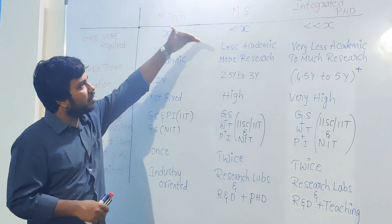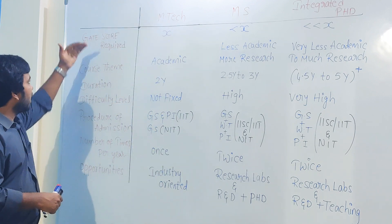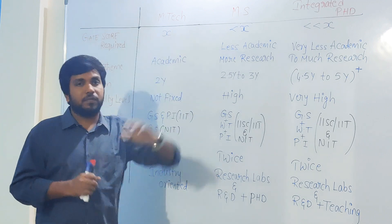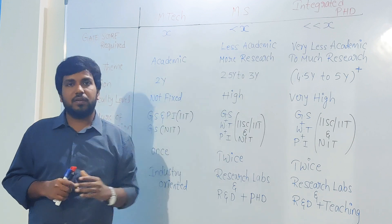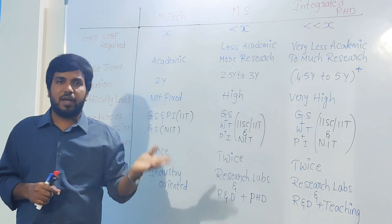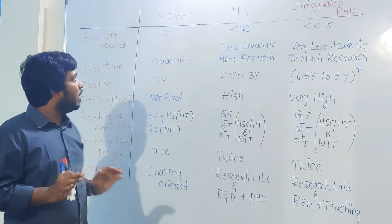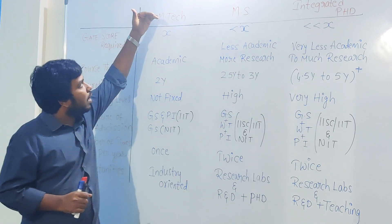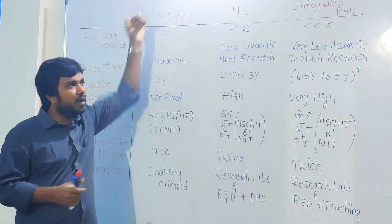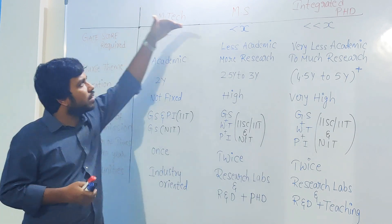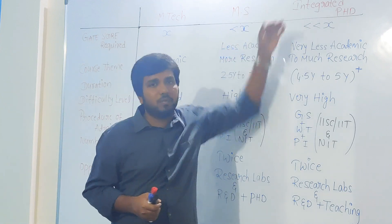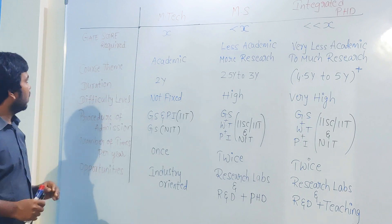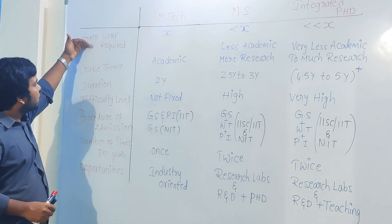First of all, all three — MTech, MS, and integrated PhD — fall in the category of higher studies. Master of Technology is purely academic-oriented and takes two years. When it comes to MS and integrated PhD, both are a kind of research-oriented. Now let me tell you an important thing: the GATE score required to get MTech admission.